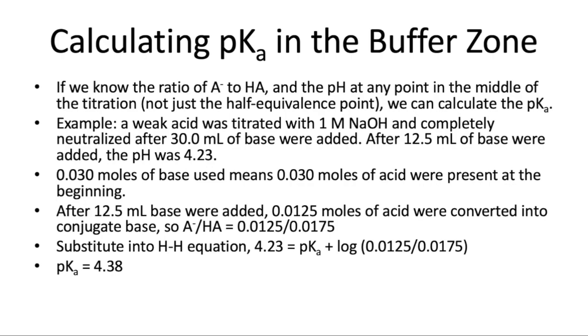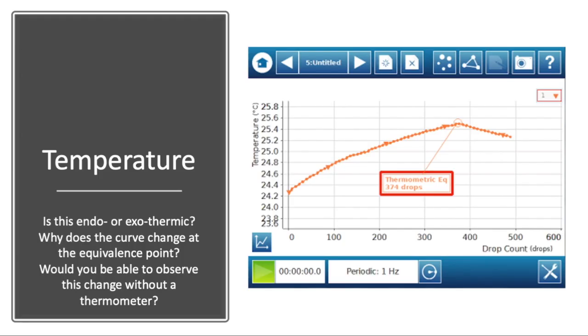A couple of other things that you're asked to think about in this lab are temperature and conductivity. So this is a graph of what temperature might look like if you were doing a titration. The temperature would go up gradually at the beginning because the reaction is releasing heat. When you get to the equivalence point, it stops increasing because the reaction is no longer going on. You've completely neutralized the acid, and so then it will start to just cool back down to room temperature. This change is really subtle. It's only about a degree difference in temperature, and you can only measure it if you have a very precise thermometer.